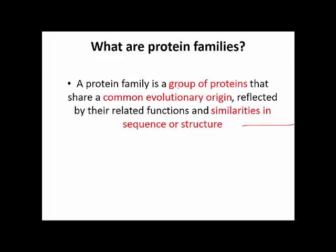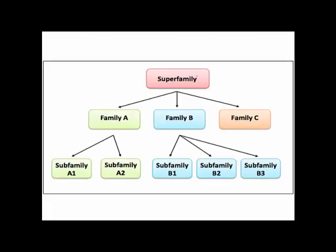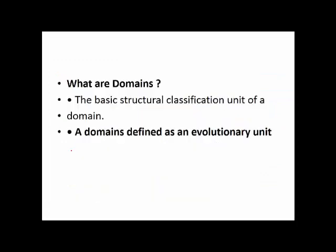Protein families are groups of proteins that have a common evolutionary origin. Based on similarity, proteins are classified into different groups, and these are called protein families. If certain proteins have structural similarity as well as sequence similarity, they are grouped together and called protein families. There are also subfamilies, and a superfamily contains many families within it, which are further divided into subfamilies.